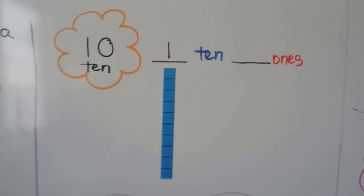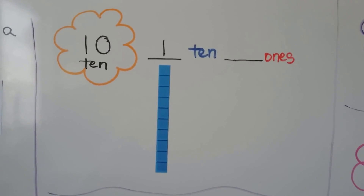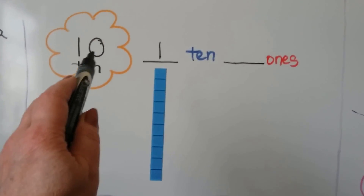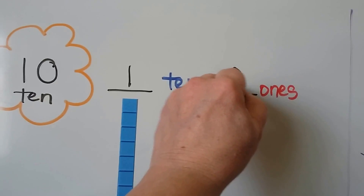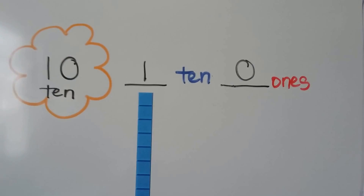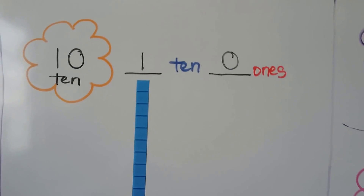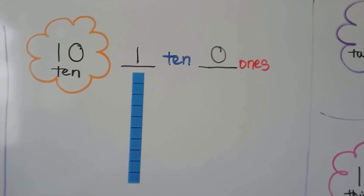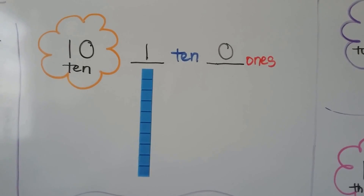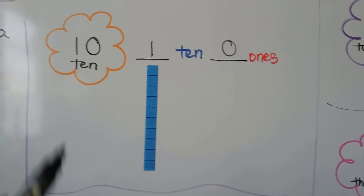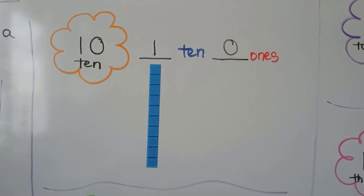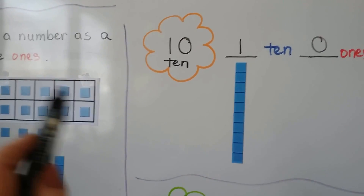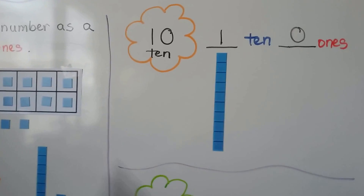Ten is just one ten and zero ones. It's just one bar of ten. We could also say it's ten ones, couldn't we? Like this, where it would fill a ten frame.